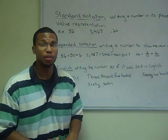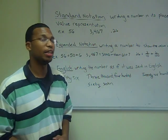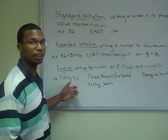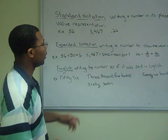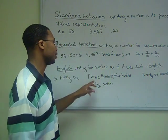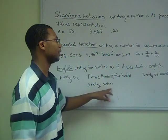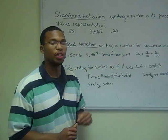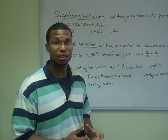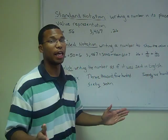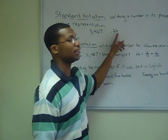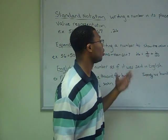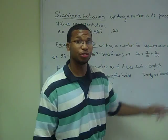In English, we would simply write the number as if we were saying it in English. So for example, the number 56, we will simply write fifty-six. If we had 3,467, we would write three thousand four hundred sixty-seven. Now on the right side of the decimal, it's slightly different — we usually take the last terminating digit and call the whole number by that place value. So because the digit ends in the hundredths place value, we call this number twenty-six hundredths.